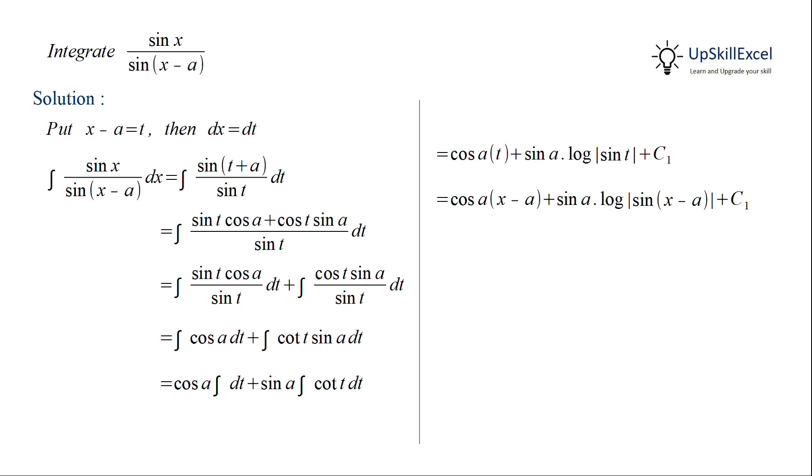We can further expand the first term, giving us x cos a minus a cos a. Here, minus a cos a is a constant term, so we can combine this constant term with our previous constant term c1, giving us a new constant c.